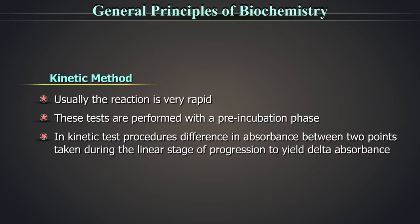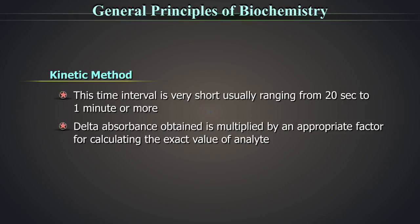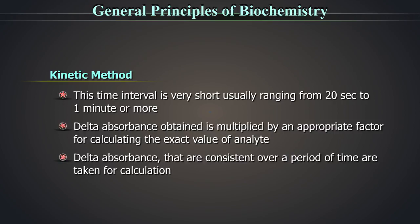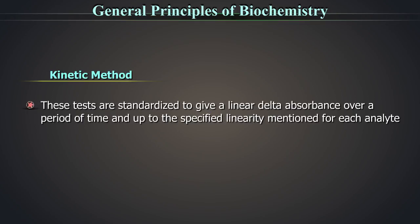In kinetic test procedures, the difference in absorbance between two points taken during the linear stage of progression of the test is taken into consideration to yield the delta absorbance. This time interval is very short, usually ranging from 20 seconds to 1 minute or more. The delta absorbance obtained is multiplied by an appropriate factor for calculating the exact value of analyte. The delta absorbance that are consistent over a period of time are taken for calculation. These tests are standardized to give a linear delta absorbance over a period of time and up to the specified linearity mentioned for each analyte.